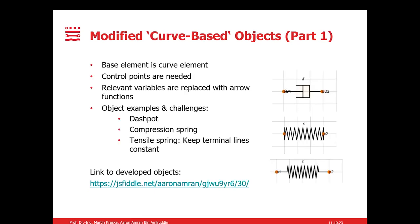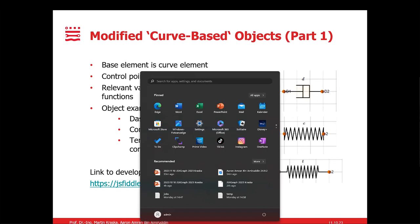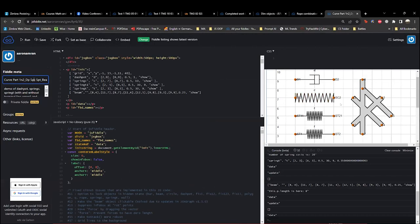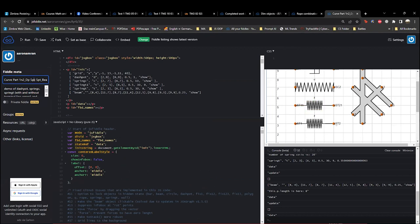Now moving on to the curve-based objects. In the case of MecLib, it will be the dashboard object, this first one, the compression spring, and the tensile spring. One of the main challenges that I faced was that in the case of the tensile spring, as the length increases, the terminal lines, which are the two lines at the end of the spring, will also increase. Then I realized that to solve this issue, I had to apply the proper scaling factor to it.